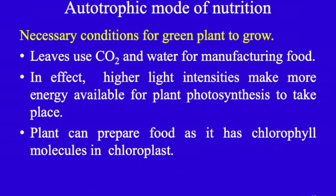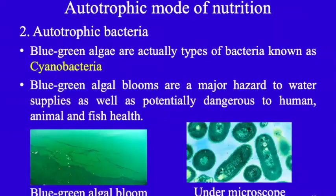Leaves use carbon dioxide and water for manufacturing food. Higher light intensities make more energy available for photosynthesis to take place. A plant can prepare food as it has chlorophyll molecules in the chloroplast.